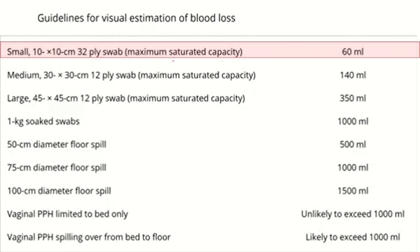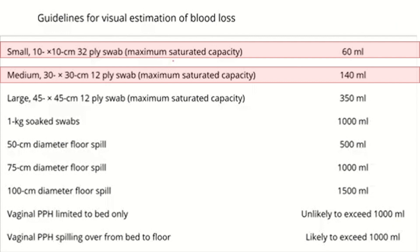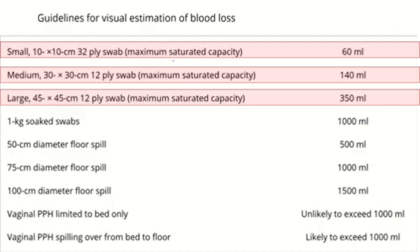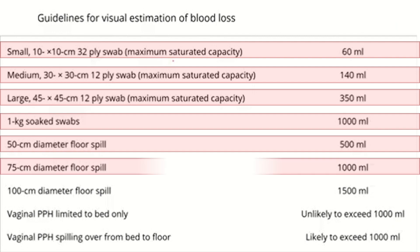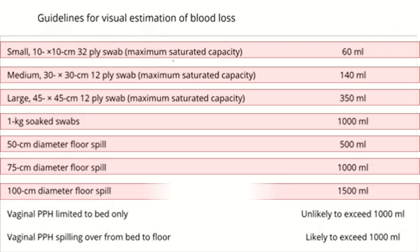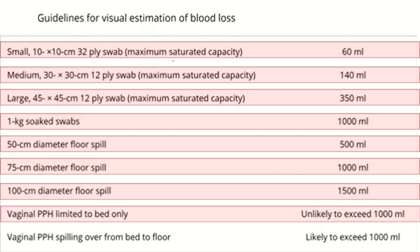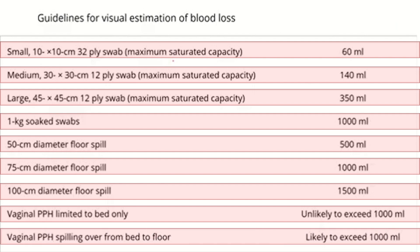This table is from guidelines for visual estimation of blood loss. A small 10x10 cm 32-ply swab at maximum saturated capacity shows 60 ml. A medium 13x30 cm 12-ply swab shows 140 ml. A large 45x45 cm 12-ply swab shows 350 ml. One kilogram soaked swabs indicate 1000 ml. A 50 cm diameter floor spill shows 500 ml, 75 cm diameter 1000 ml, and 100 cm diameter 1500 ml. Vaginal PPH limited to bed is unlikely to exceed 1000 ml, while PPH spilling from bed to floor is likely to exceed 1000 ml.